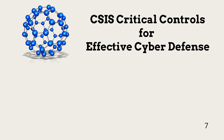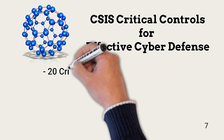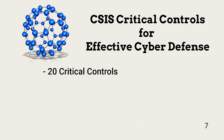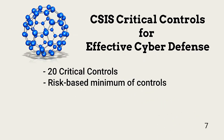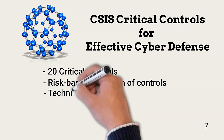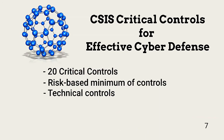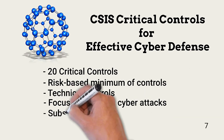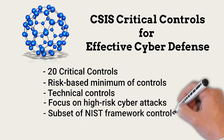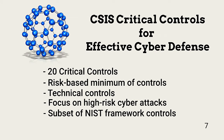The Center for Strategic and International Studies, or CSIS, provides guidance for implementing 20 critical controls. The CSIS considers these controls as the minimum needed to effectively manage risk. All 20 are technical controls that focus on high-risk cyberattacks. They are a subset of NIST framework controls and are a good start for new networks, for protection during initial risk assessments, and full security control implementation.